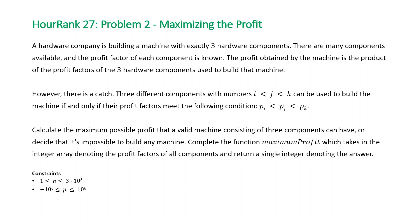The question states a hardware company is building a machine with exactly three hardware components. There are many components available and the profit factor of each component is known. The profit obtained by the machine is the product of the profit factors of the three hardware components used to build that machine. However, there is a catch: three different components with numbers i less than j less than k can be used to build the machine if and only if their profit factors meet the condition pi less than pj less than pk. Calculate the maximum possible profit that a valid machine consisting of three components can have, or decide that it's impossible to build any machine.